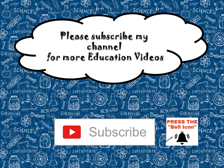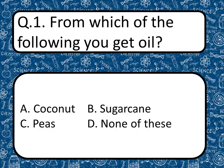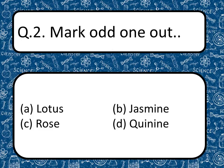This is our first question: From which of the following do you get oil? Options are coconut, sugarcane, peas, or none of these. Guess your answer. The correct answer is coconut. Mark the odd one out — our options are lotus, jasmine,